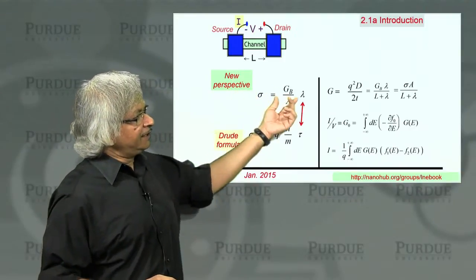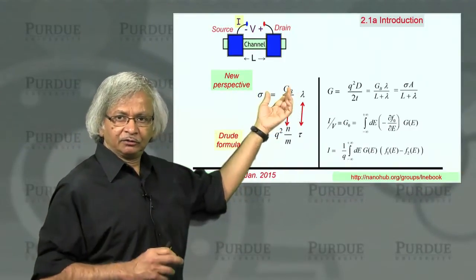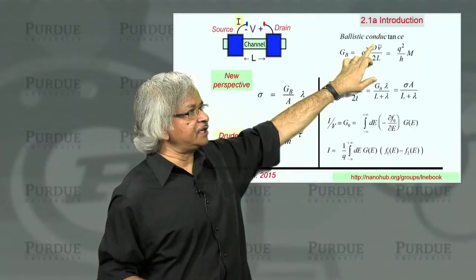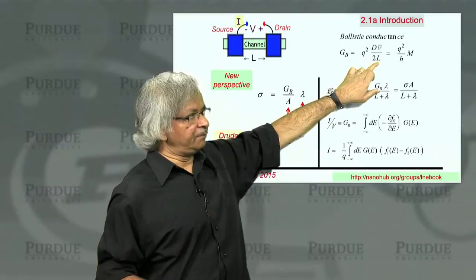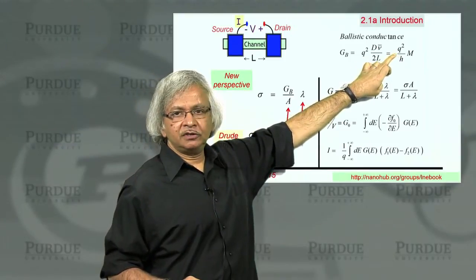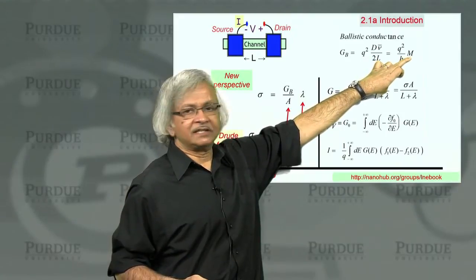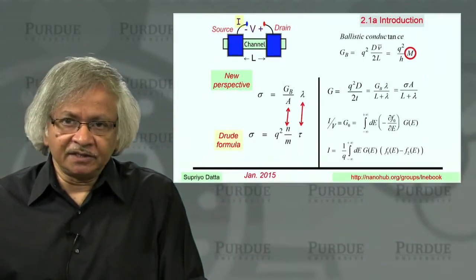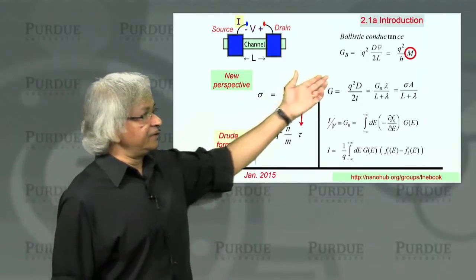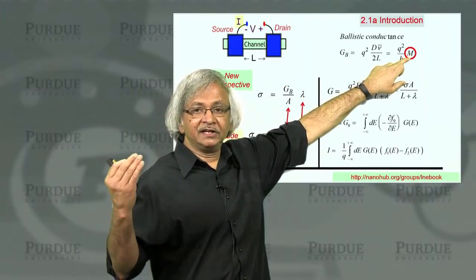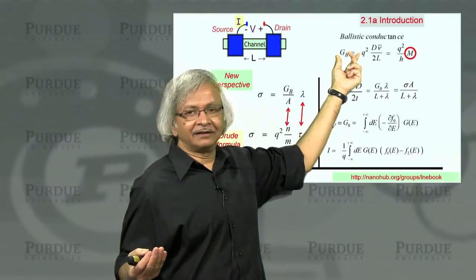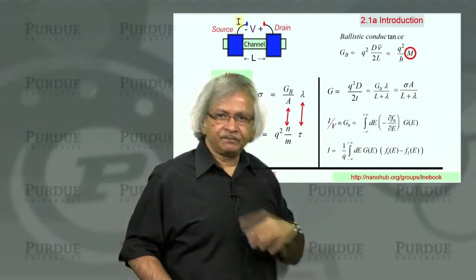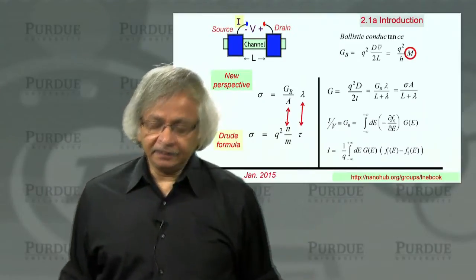So in this new perspective, this ballistic conductance plays a very important role. The expression for it, as we discussed, is this density of states times the average velocity divided by the length. And we also wrote it in terms of what's called this number of modes. One of the important things we have learned in mesoscopic physics and nanoelectronics is that in really small devices, that m is an integer. So the ballistic conductance is actually quantized in terms of this conductance quantum, q squared over h.